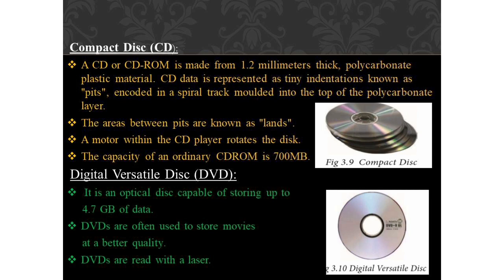A DVD (Digital Versatile Disk or Digital Video Disk) is an optical disk capable of storing up to 4.7 GB of data — more than six times what a CD can hold. DVDs are often used to store movies at better quality. Like CDs, DVDs are read with a laser. The disk can have one or two sides and one or two layers of data per side. Double-layer sides are usually gold colored, while single-layer sides are silver colored.